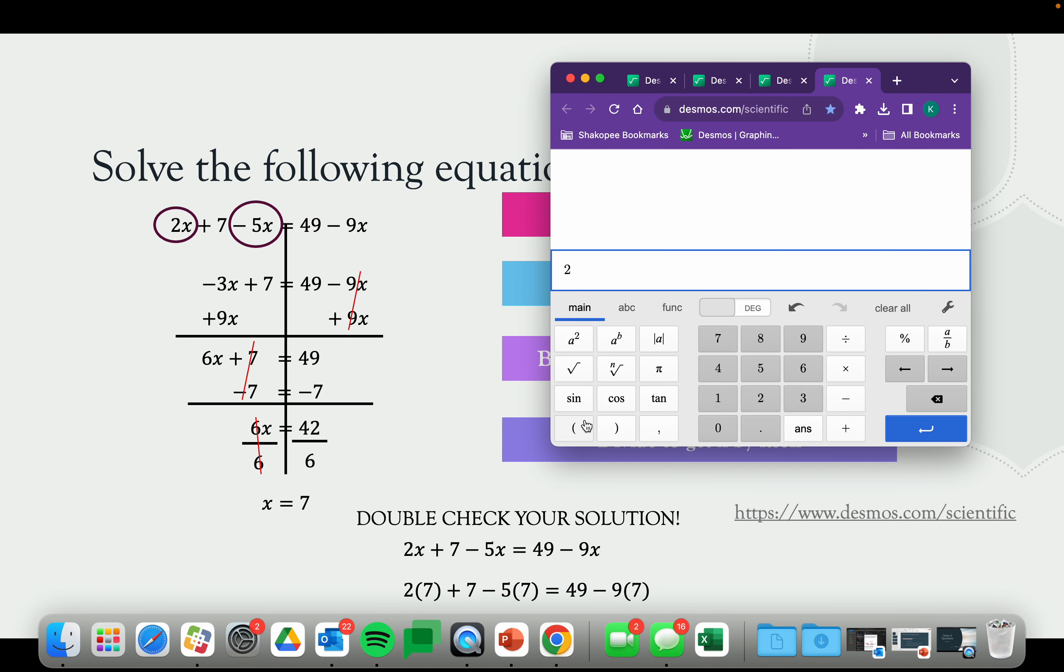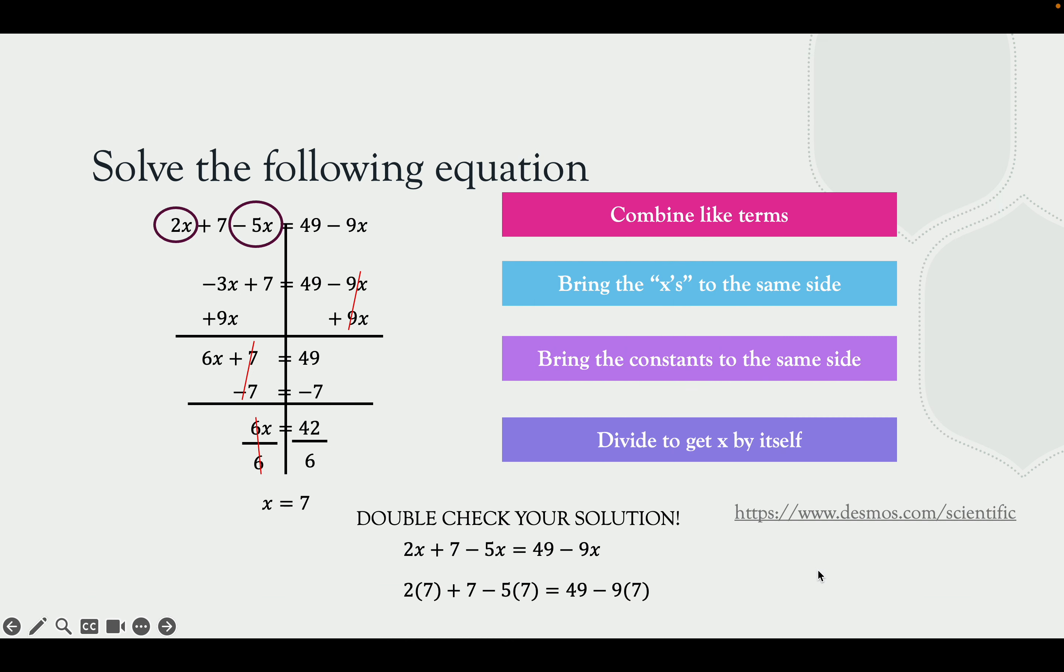We can go to our calculator. We can punch in 2 times 7 plus 7 minus 5 times 7. So instead of the x, I'm plugging in 7. And see, this is the left side of the equation. So I plug that in. I got negative 14. Now I'm going to plug in the right side. Since there's x's on both sides, I need to take each side separately and verify that each side is going to get me the same solution. I get negative 14 for both of these. The scientific calculator helps you keep track that you have both solutions sitting right there. You don't have to remember anything. It's right in front of you. Negative 14 equals negative 14. The solution checks out.